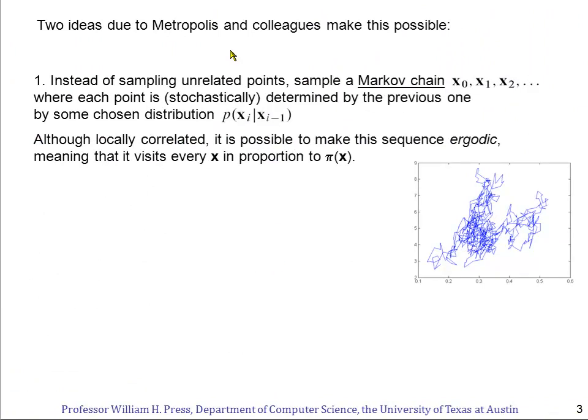So there are two ideas, more than half a century old, due to Metropolis and his colleagues that make this possible. I'm going to come back in a few minutes to the colleagues and give you some explanation there. The first idea is that instead of sampling unrelated points X, we should sample a Markov chain of points, a sequence of points X0, X1, X2, where each point in the sequence is determined stochastically, that is with some randomness, from the previous one.